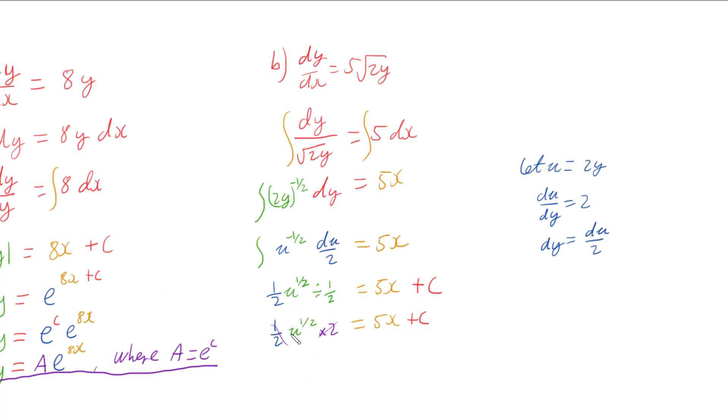And so if I put the u back in and change this power of a half to a square root, I've got the square root, and u was 2y. So I've got the square root of 2y equals 5x plus c.